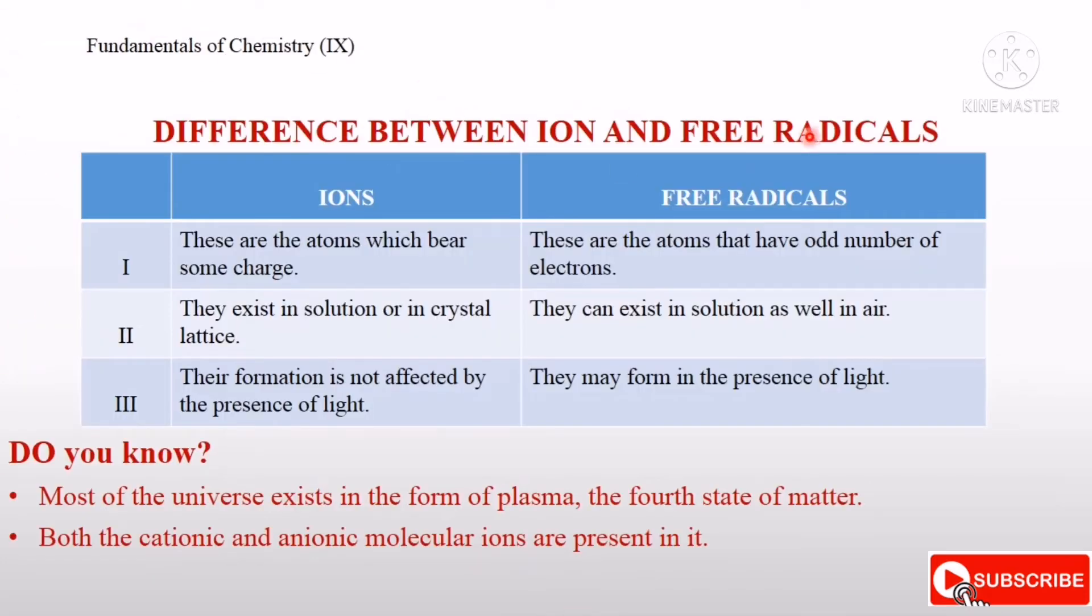Now the difference between ions and free radicals. As we have learnt, ions are the atoms which bear some charge. Ions are atoms having some charge on it, whereas free radicals are the atoms that have odd number of unpaired electrons.